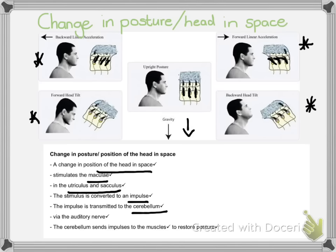This stimulus is converted into an impulse and transmitted to the cerebellum — linking to your nervous system knowledge. It moves via the auditory nerve and the cerebellum sends impulses to the muscles to restore posture. This final point is very important because often this is an application question asking what the brain did to correct the action or how you stopped yourself from falling — you must mention how the muscles were coordinated by the cerebellum to restore posture.